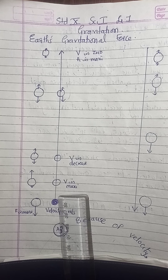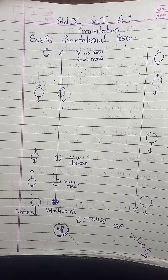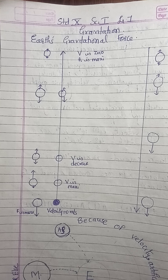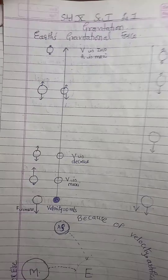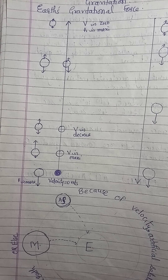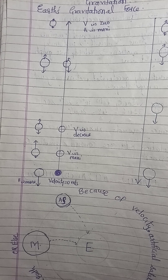The force of gravity is acting on each and every object. In Newton's experiment, when an apple fell on his head, he raised one question: why did the apple not go up? Why did it fall down? Why is it that only the Earth is attracting the apple? And the reason found was that mass plays an important role in the force of attraction.